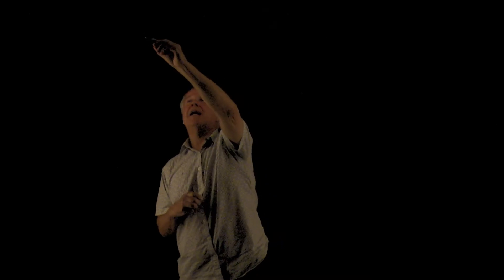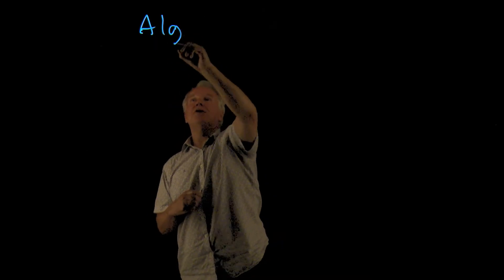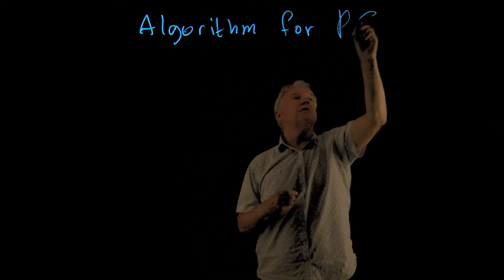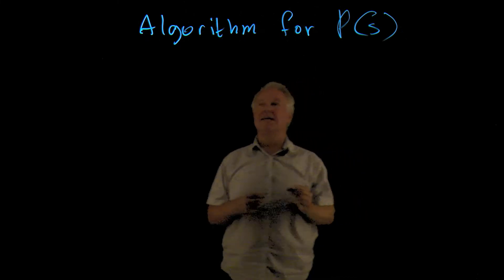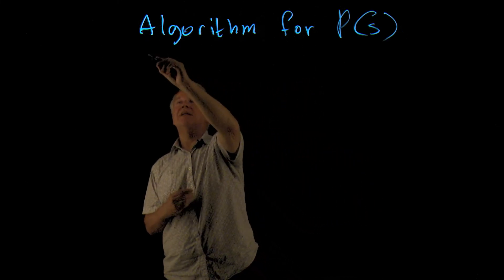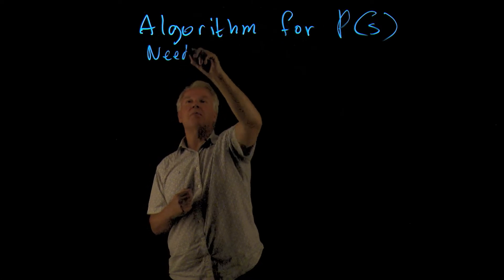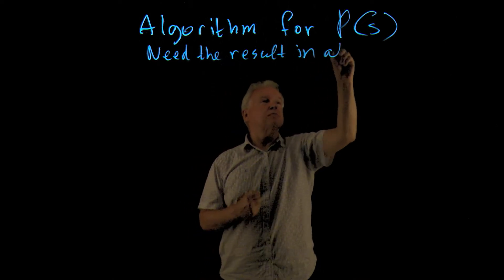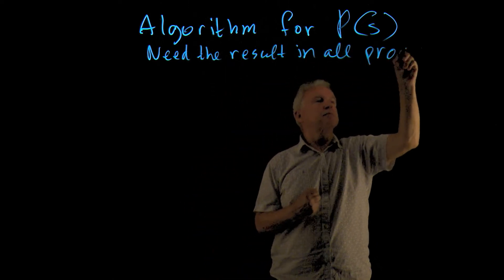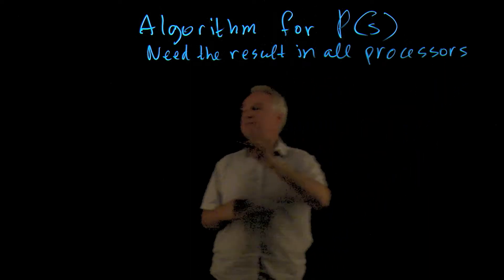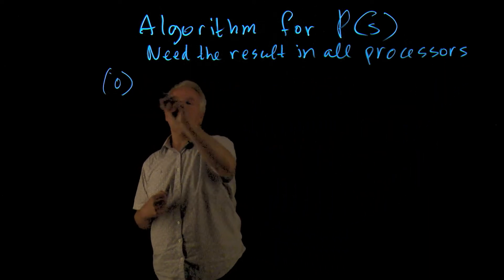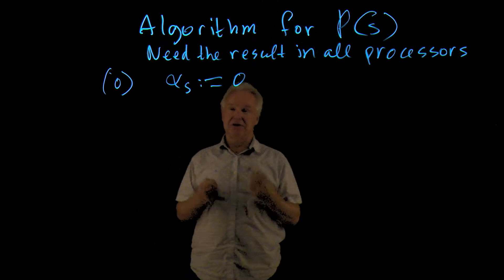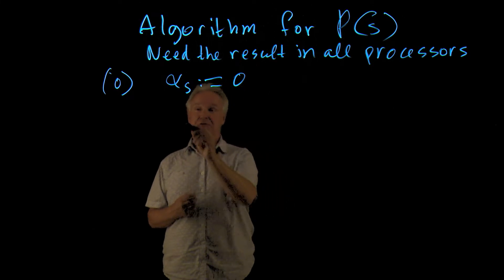So we're going to write down the algorithm in more detail. Algorithm for processor PS, and S is the processor identity. And we need the result in all processors. So we start with super step 0. We compute an alpha S, which is the local partial sum, initialize it to 0.